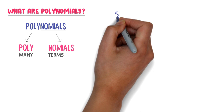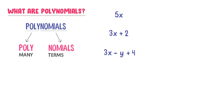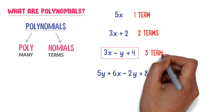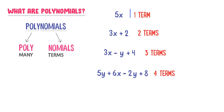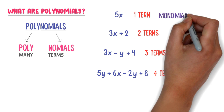Consider different algebraic expressions: 5X has one term, 3X plus 2 has two terms, 3X minus 5 plus 4 has three terms, and 5Y plus 6 minus 2Y plus 8 has four terms. Instead of saying one term, I write mono and nominal — because mono means one and nominal means term.